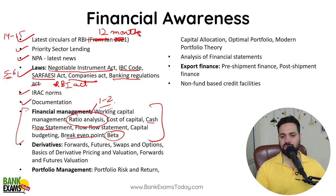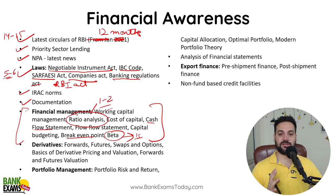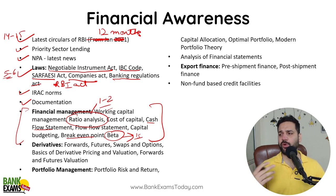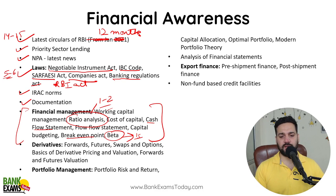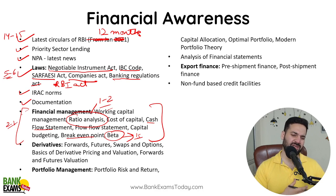Beta is a very small topic — you can do it in 15 minutes. Ratio Analysis takes about 4–5 hours. Break Even Point takes about 2 hours because there are numericals involved. Within 2–3 days you can complete Financial Management easily.